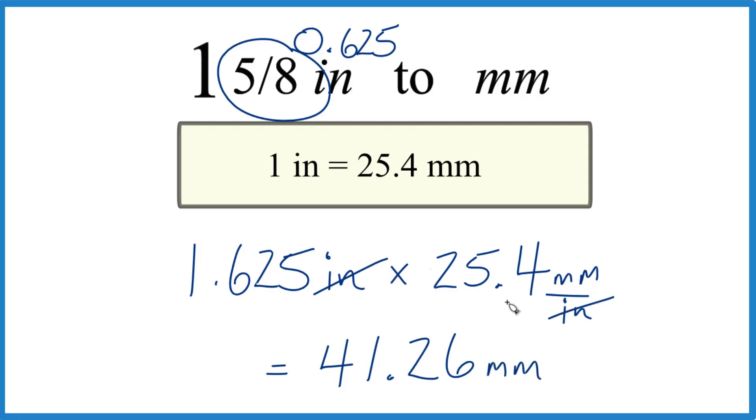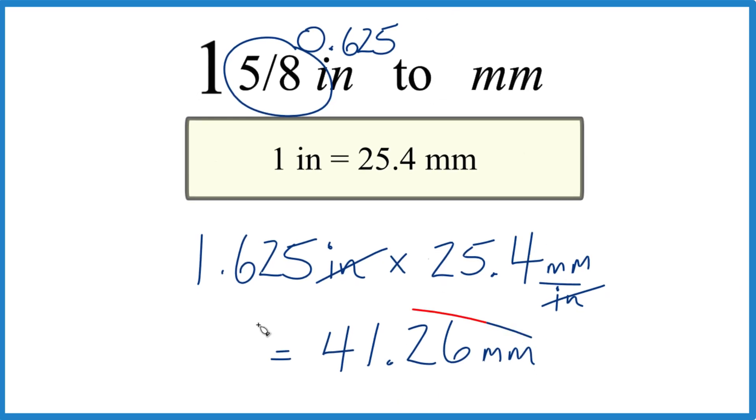We end up with millimeters. So when you convert 1 and 5/8 inches, it ends up being 41.26 or 41.3 millimeters.